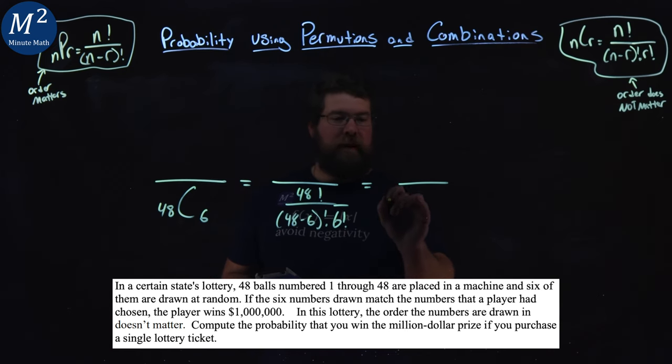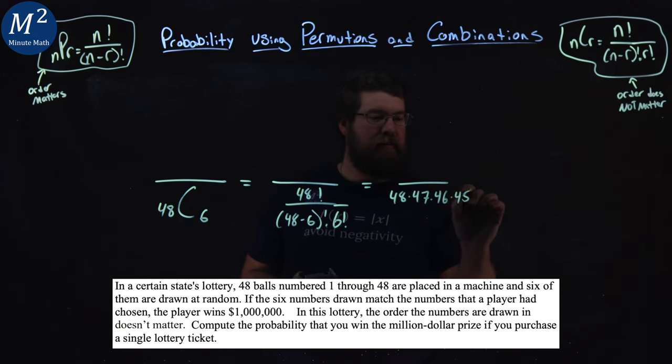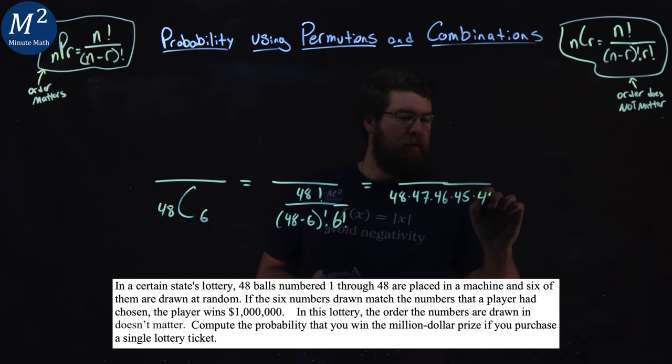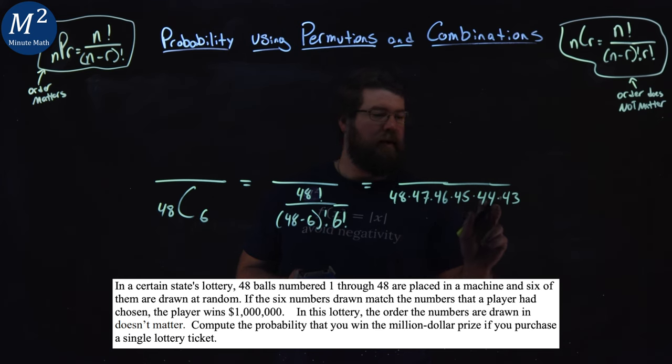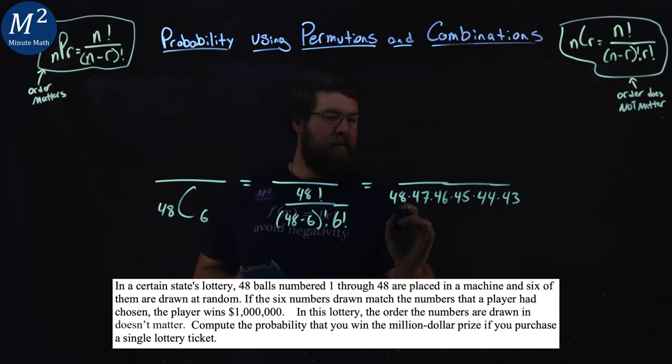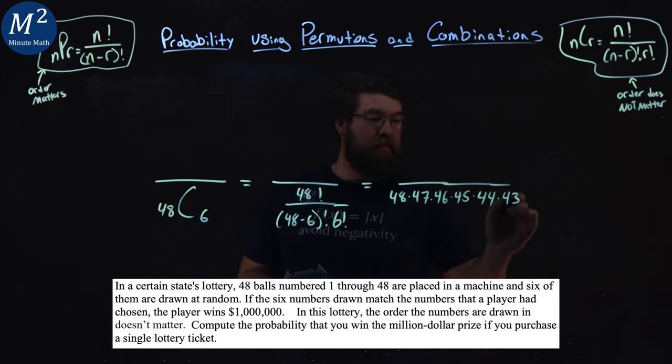The 48 times 47 times 46 times 45 times 44 times 43. And then that cancels out the denominator. The rest of them will cancel out afterwards.